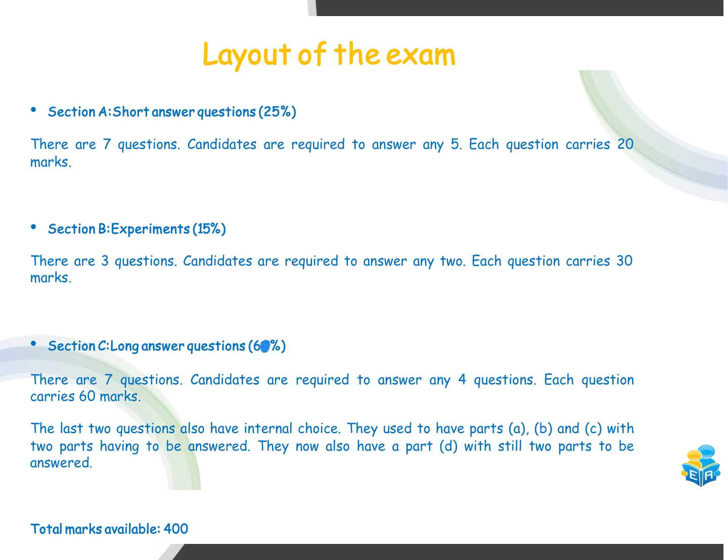Section B is the experiment questions. These are worth 15%. There are three experiment questions and you're only required to answer two. Each one carries 30 marks. And then Section C is the long answer questions.